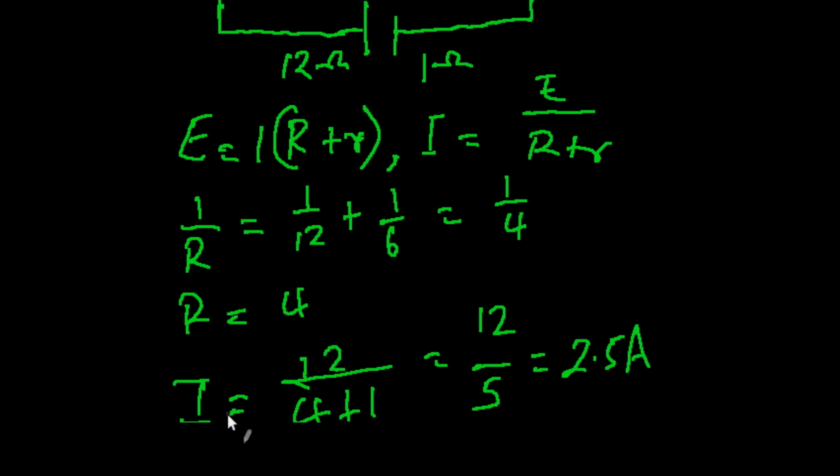So our current given by E all over big R plus small r will simply be 12 all over 4 plus 1, our internal resistance. That's going to be giving us 12 over 5, and that is 2.5 amperes.